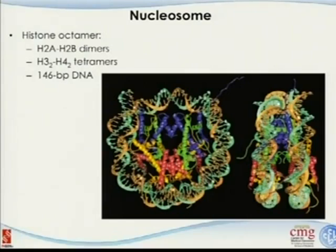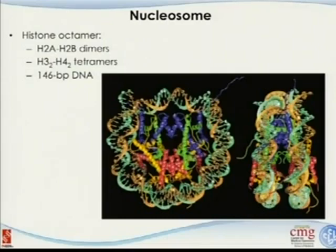Once we zoom in to one nucleosome, you can see there are four different histones — histone 2A, 2B dimers, histone 3, and histone 4. The double helix DNA wraps around them. Each nucleosome is about 146 to 147 nucleotides in terms of DNA. This histone part is a solid protein structure and the DNA is wrapping around it.